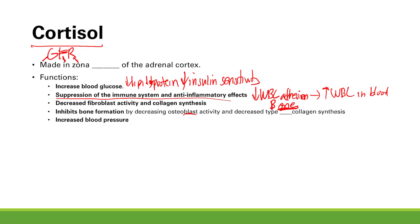Next, cortisol increases blood pressure by upregulating alpha-1 receptors. Alpha-1 receptors are in the arterioles and cause vasoconstriction when stimulated. So to summarize: glucocorticoids increase blood glucose, suppress the immune system making you susceptible to infections, cause poor wound healing from decreased fibroblast activity and collagen synthesis, inhibit bone formation putting you at risk for osteoporosis, and increase blood pressure.